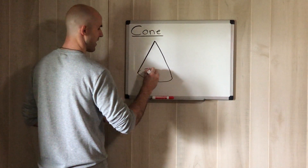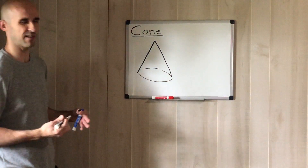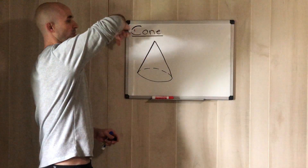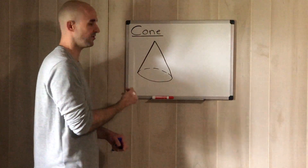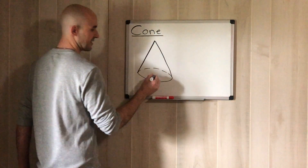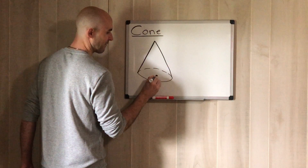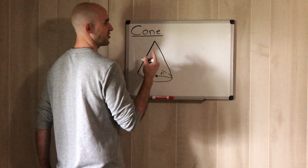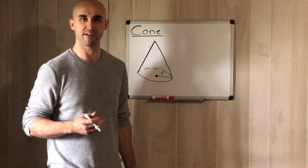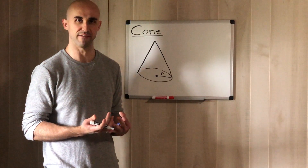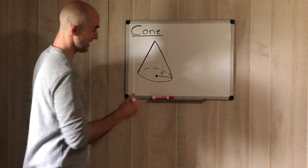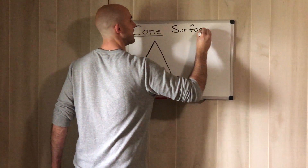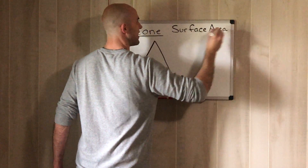Think of an ice cream cone — you have the cone shape and then on the base you have a circle. Since it's three-dimensional it won't look like a perfect circle, but that's what we have: the part that wraps around the cone and the base which is always a circle. Since the base is a circle, we always have a radius. Surface area is how much is on the outside of any three-dimensional figure; volume is what's on the inside.